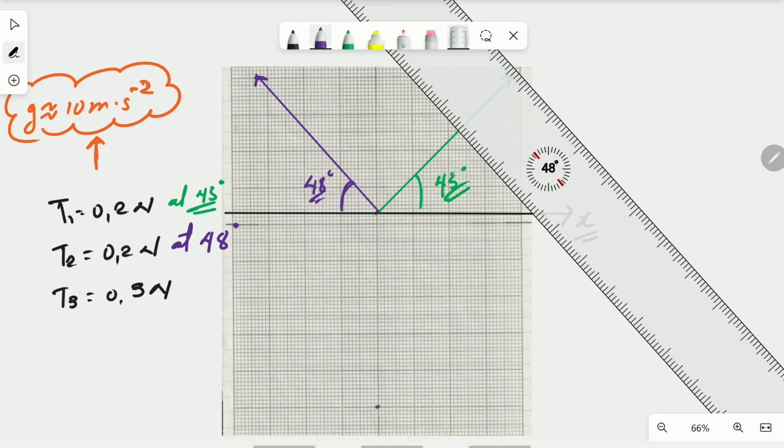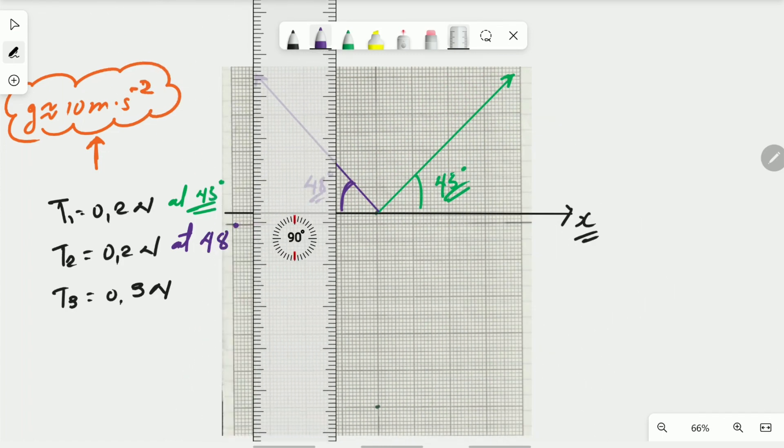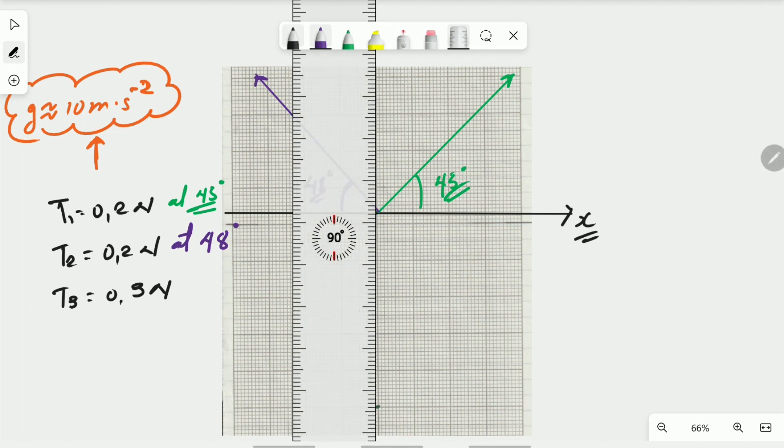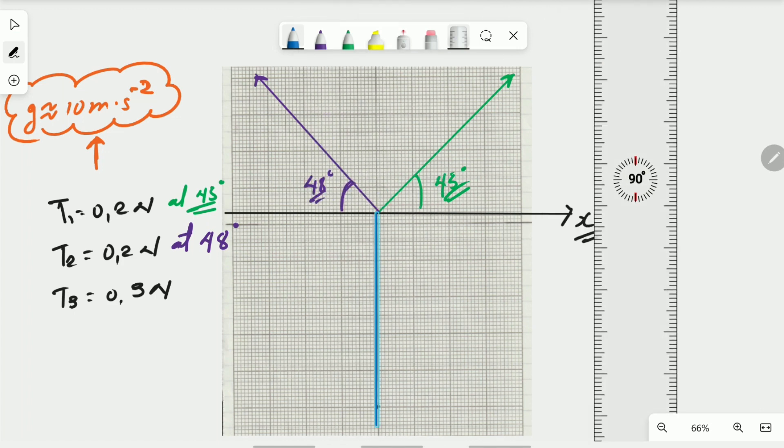And then the last one is straightforward, all the way 90 degrees down, all the way to the point there. Here all the way down from the starting to there, and this one you can see the angle is 90 degrees. You don't have to write that angle. This one is T3.